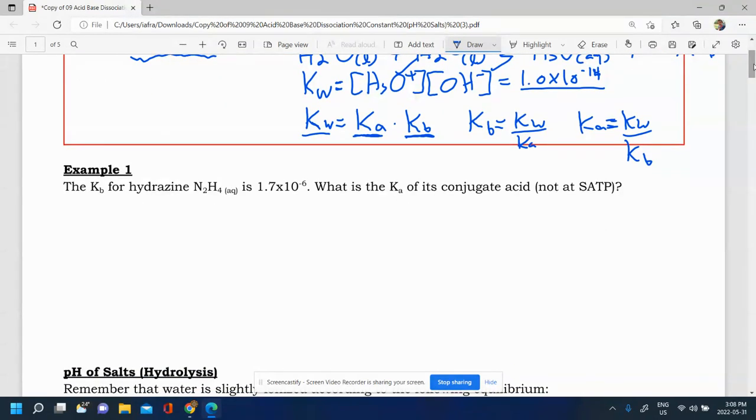Here we have example one. The Kb for hydrazine, N2H4, is 1.7 times 10 to the power of negative 6. What is the Ka for the conjugate acid? So what we know is that Kw is equal to Ka times Kb.